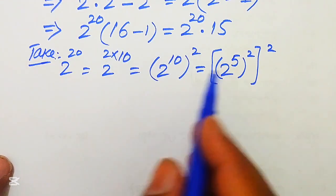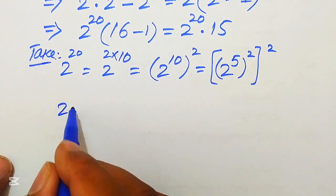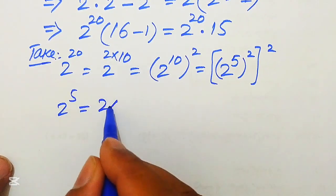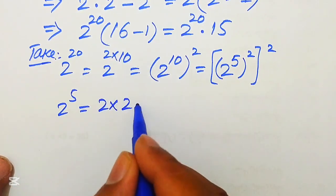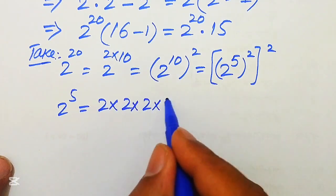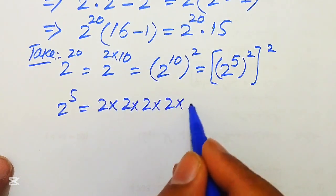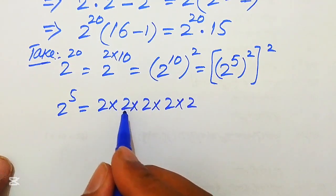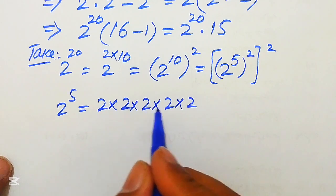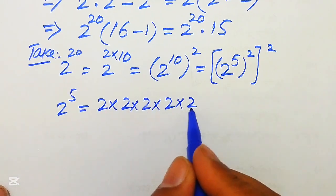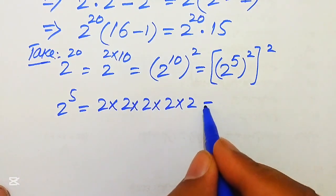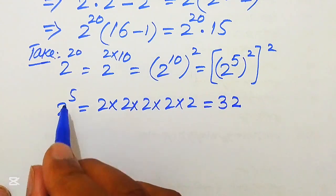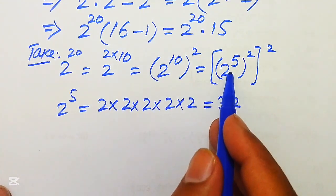We focus on 2 to the power of 5. Multiplying 2 five times: 2, 4, 8, 16, 32. So 2 to the power of 5 equals 32.